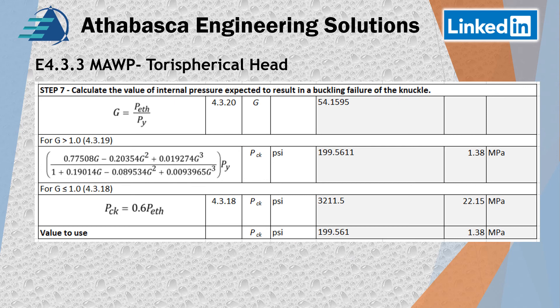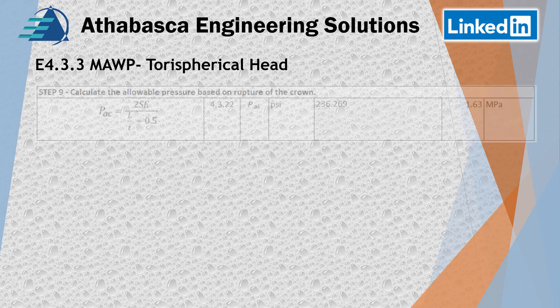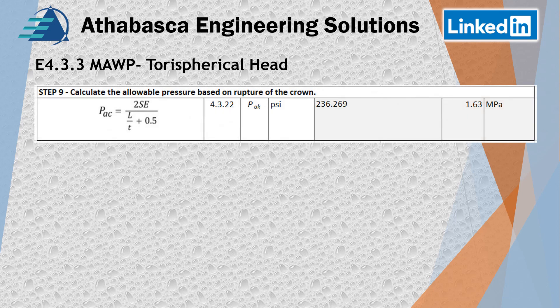Continuing for the next steps, we calculate the allowable pressure based on buckling failure of the knuckle, putting in the correction factor for safety allowance and reducing it down to 133 PSI — which matches closely to the example. In step nine we calculate the allowable pressure based on rupture of the crown. This is only available in Division 2, and we find it's quite a bit higher, which is what we would expect. So our vulnerability is at the knuckle.